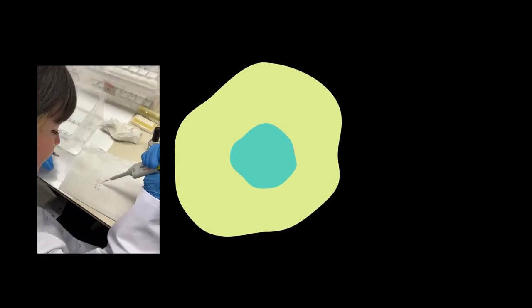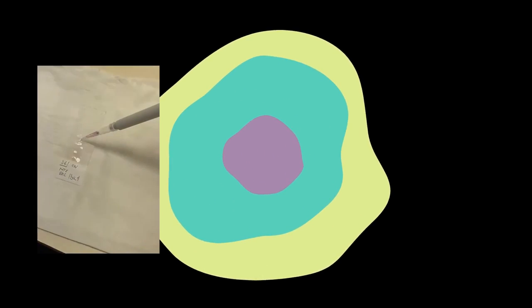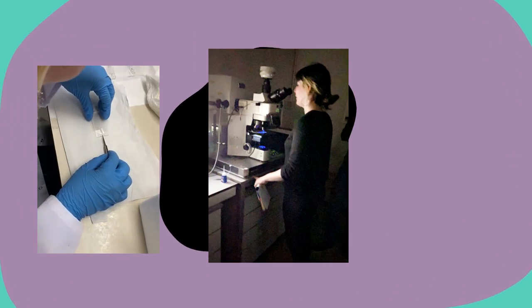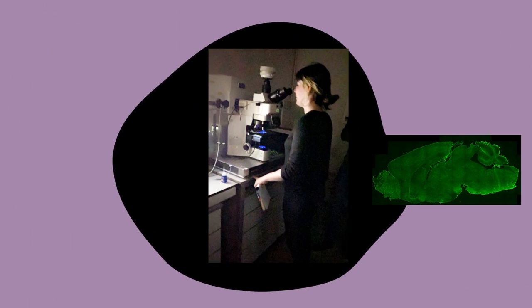Once we have our brain slices, we can start immunostaining of these slices with the different antibodies. This way, we can observe the specific proteins of interest using a confocal microscope, and also capture images for quantification and analysis.